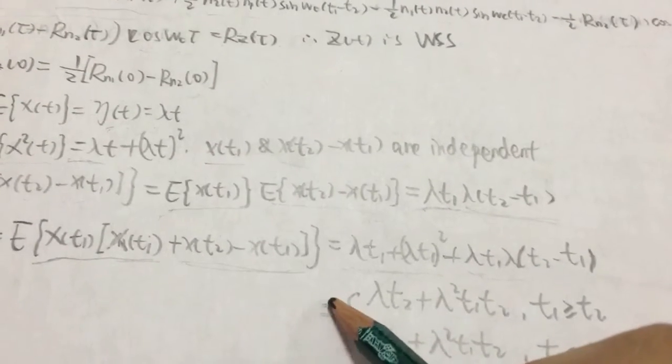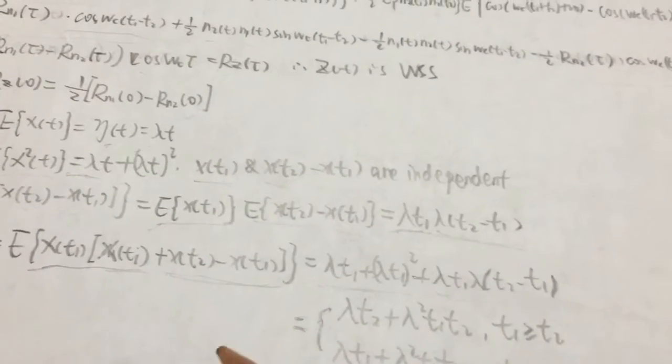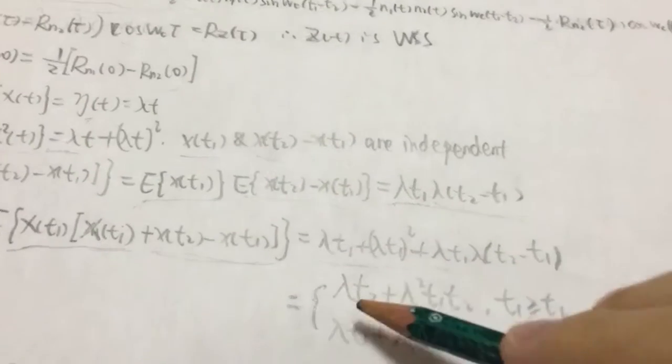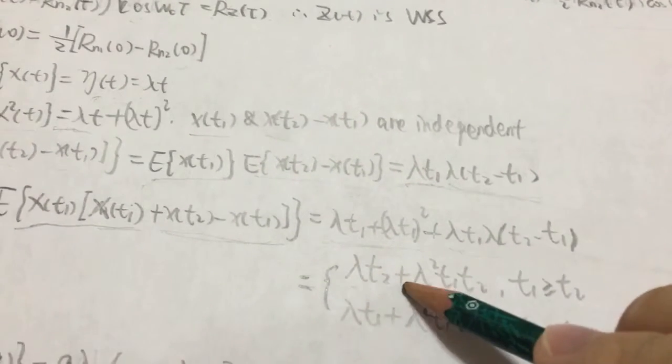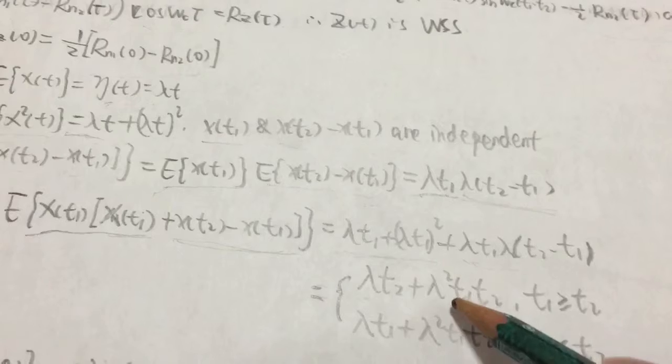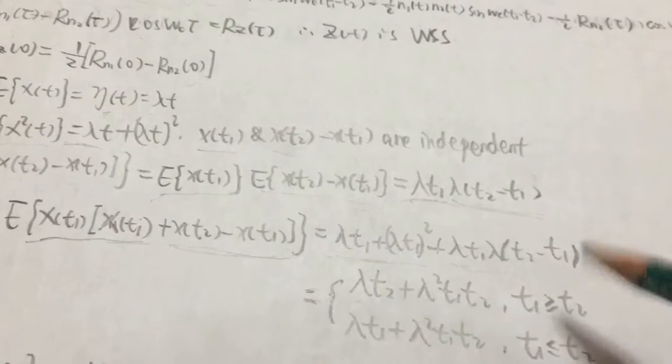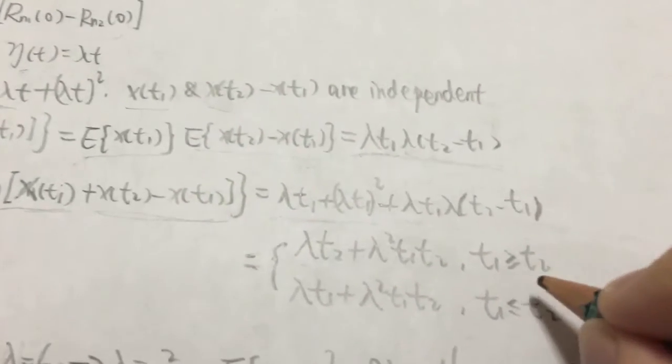So we have R(t1, t2) equals lambda t1 plus lambda squared t1 t2 when t1 is less than t2.